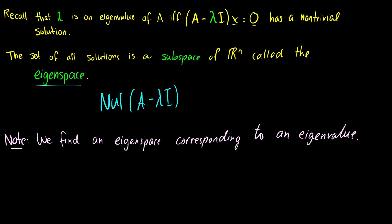The eigenspace is just the null space of A minus lambda I for whatever value of lambda we choose. It's important to remember that we find eigenspaces corresponding to eigenvalues. A matrix can have different eigenvalues, and if we don't put in a specific number, it's very hard to find an eigenspace. So the eigenspace corresponds to an eigenvalue.